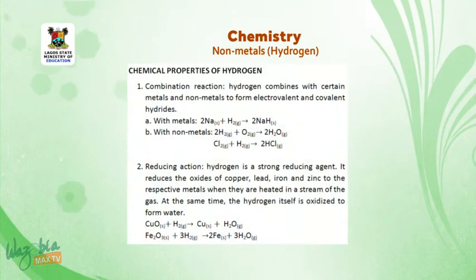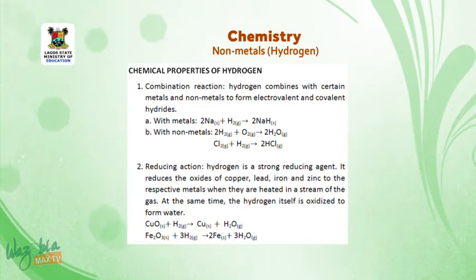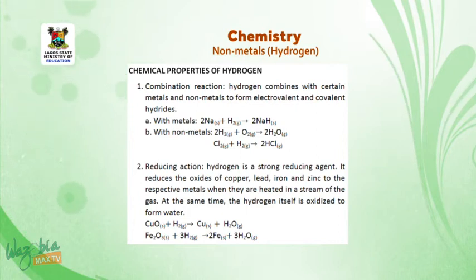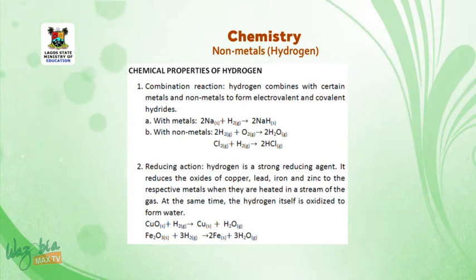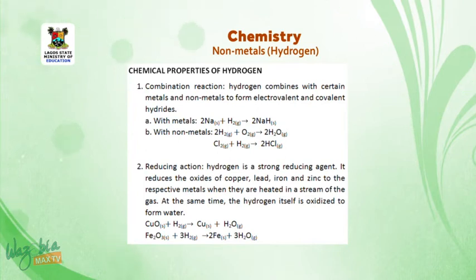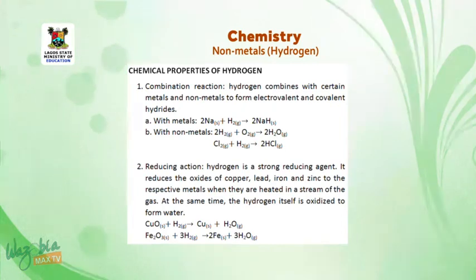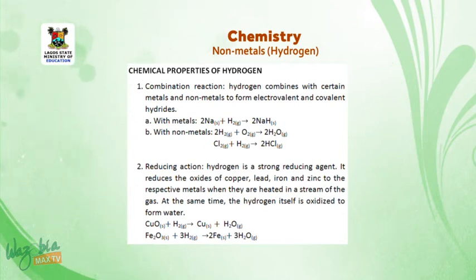Chemical properties of hydrogen. Number 1 — Combination reaction: Hydrogen combines with certain metals and non-metals to form electrovalent and covalent hydrides. A. With metals: hydrogen combines with sodium metal to produce sodium hydride. B. With non-metals: hydrogen combines with oxygen to produce water, and with chlorine gas to produce hydrogen chloride.